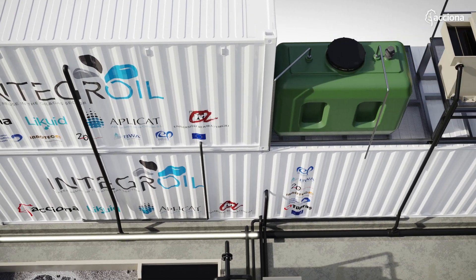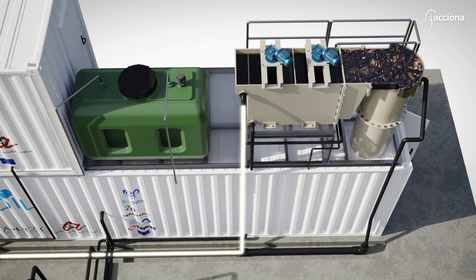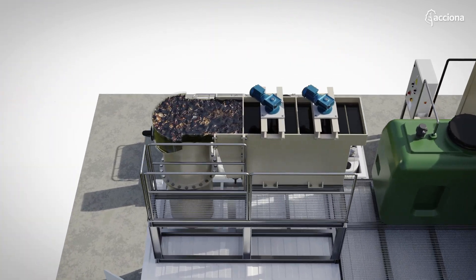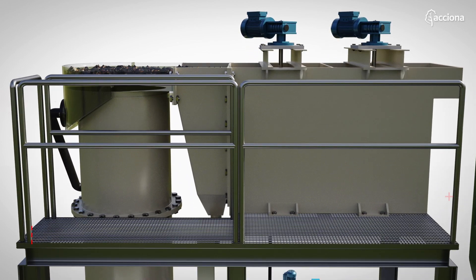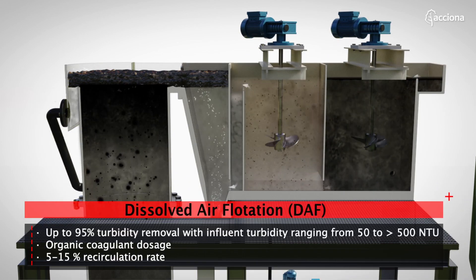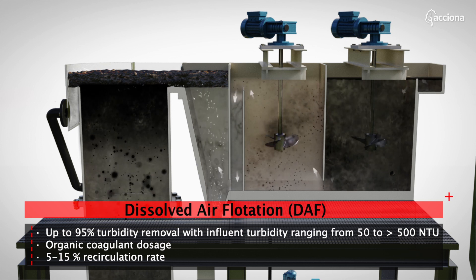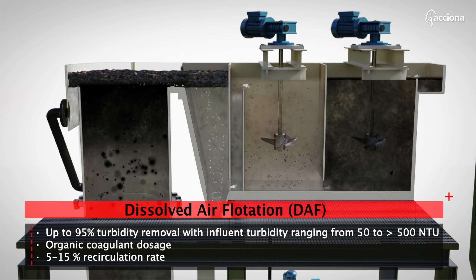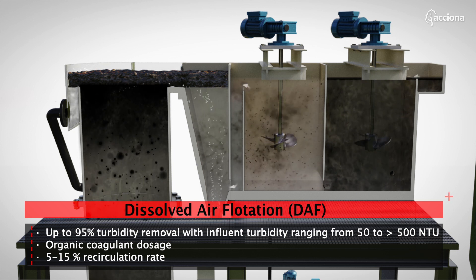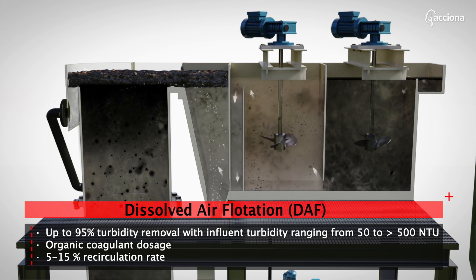Suspended matter present in the water is removed using a dissolved air flotation module. The removal is achieved by dissolving pressurized air in the water in a flotation tank basin. The released air forms tiny bubbles which adhere to the suspended matter, causing it to float to the surface of the water where it is removed by a skimmer.